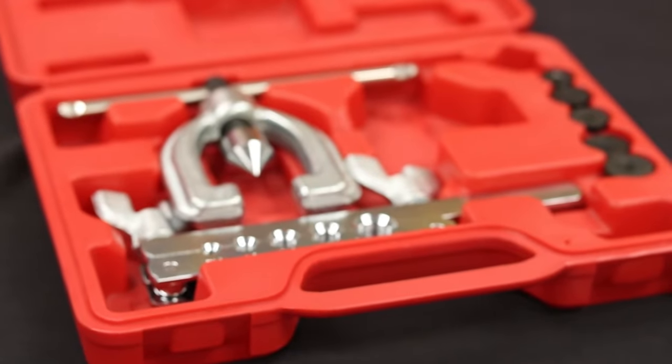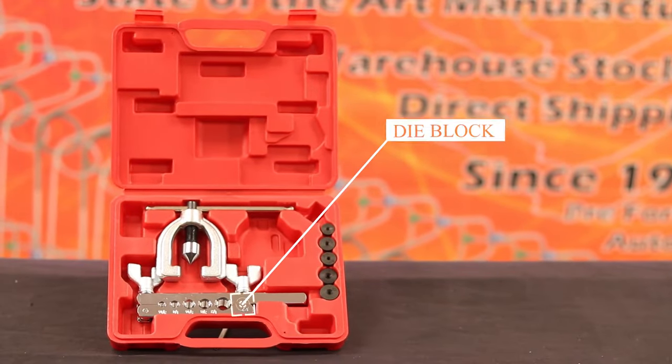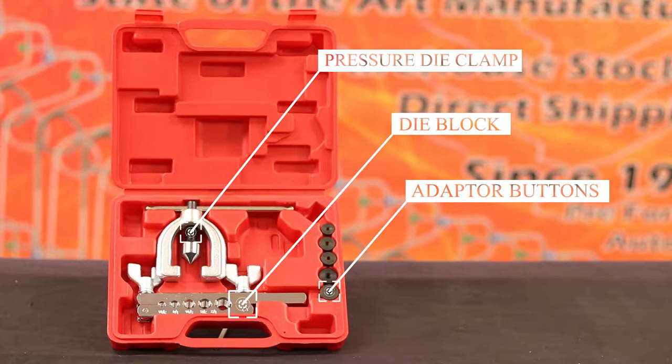Next, you will need your double flare tool and adapter kit. This kit contains everything you need to do the flare, including the die block, adapter buttons, and pressure die clamps.